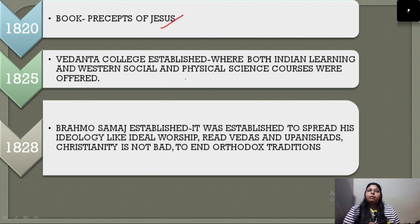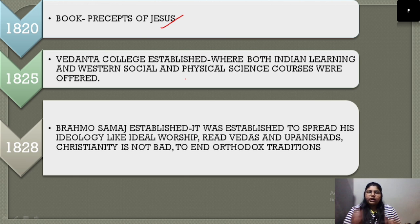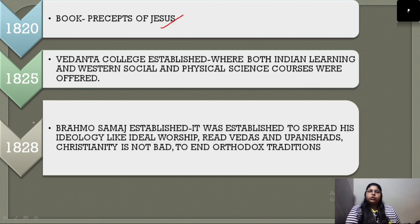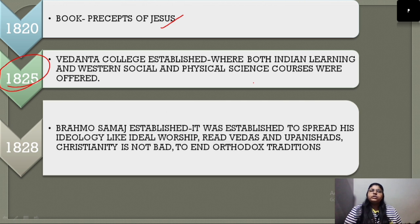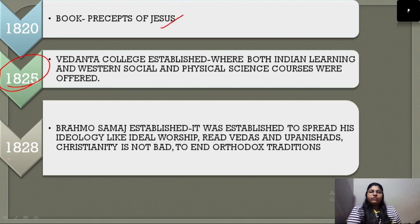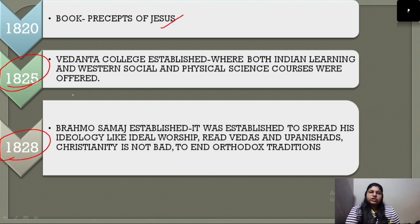Raja Ram Mohan Roy supported Western education because it was focused on rational thinking. In 1825, he established the Vedant College, which offered Western Social and Physical Sciences courses along with Indian learning. In 1828, he established the Brahmo Society, which became the most important organization to spread his ideology.